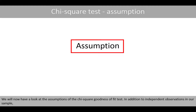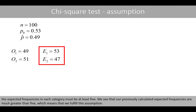We will now have a look at the assumptions of the chi-square goodness of fit test. In addition to independent observations in our sample, the expected frequencies in each category must be at least 5. We see that our previously calculated expected frequencies are much greater than 5, which means that we fulfill this assumption.